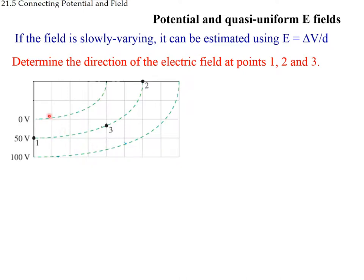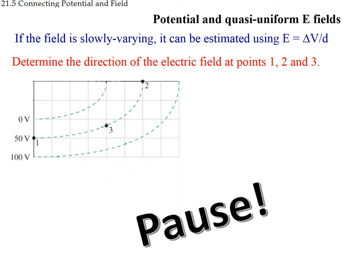Sometimes equipotential lines are not uniformly distributed — they get contracted or separated. If the field is slowly varying, we can estimate the magnitude of the field from the equipotential surfaces using delta V over d. For instance, let us first find the direction of the electric field at points 1, 2, and 3. Pause and think, remembering that the field always goes to lower potential values.